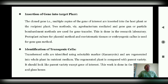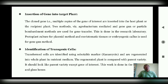The two methods for gene insertion are Agrobacterium-mediated gene transfer and gene gun bombardment. Another important step is to identify the transgenic cells. Once the genes are inserted, we need to identify the transformed cell using selectable markers. The regenerated plant is then compared with the parent variety and should resemble it.